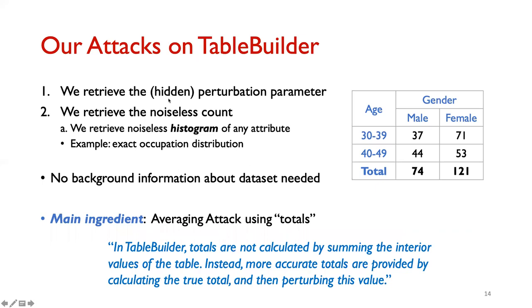Our attacks on Table Builder are as follows. The first one retrieves the hidden perturbation parameter. The second one finds the true noiseless count, and we can extend this to find the true histogram of any attribute, such as the exact occupation distribution. Notably, the attacks are quite simple and do not require any background information about the dataset. The main ingredient is an averaging attack on the totals row or column.